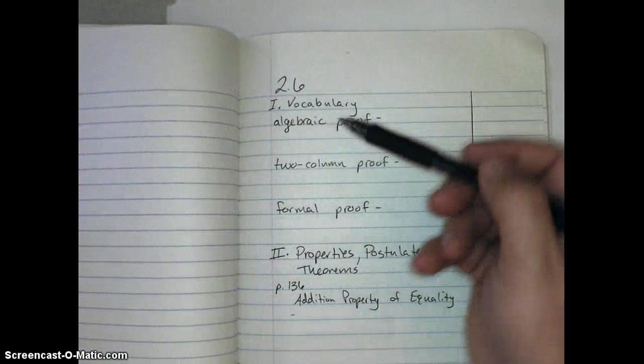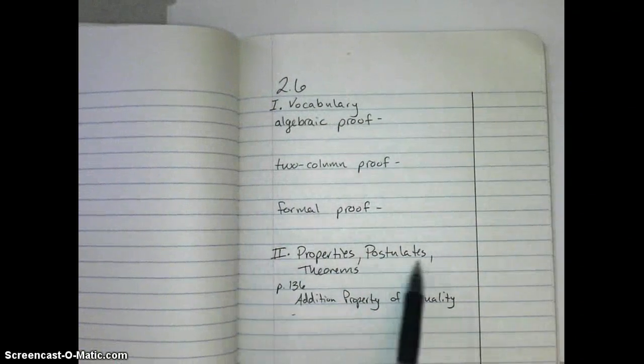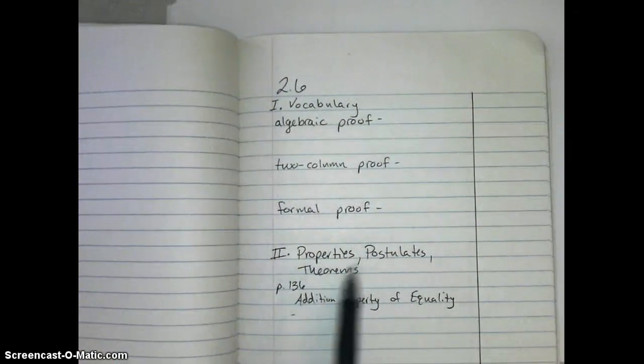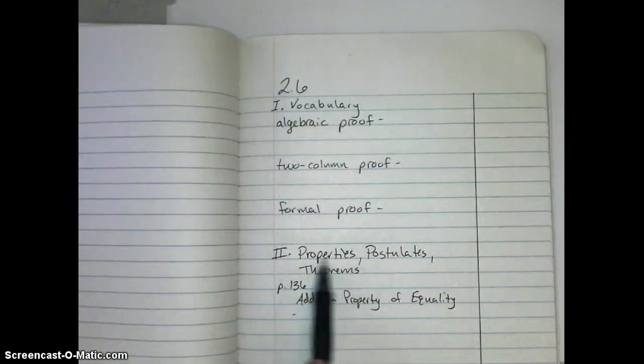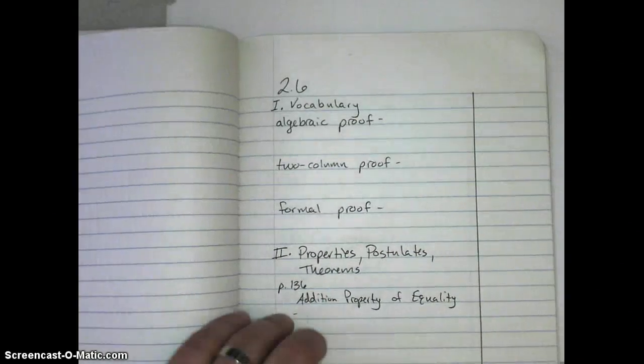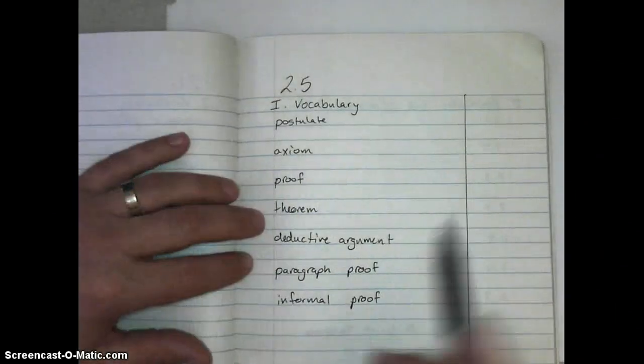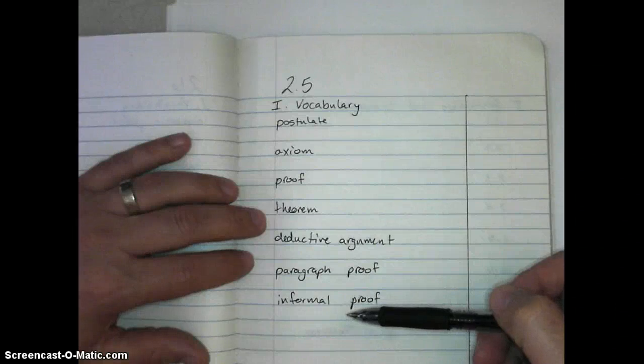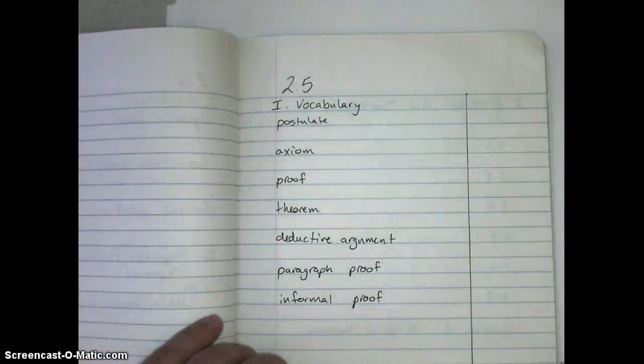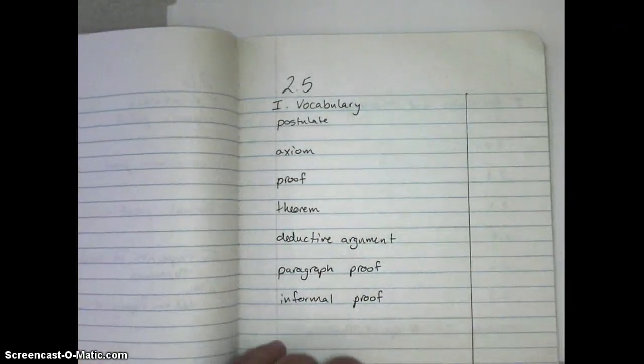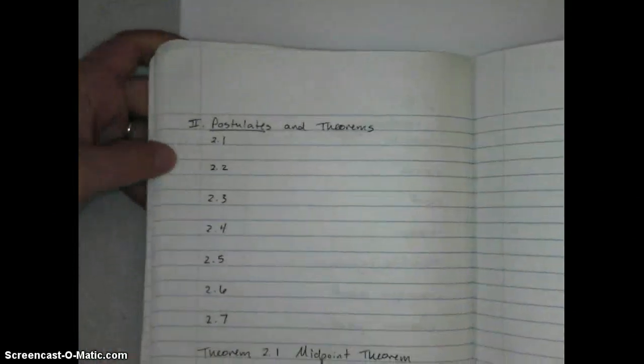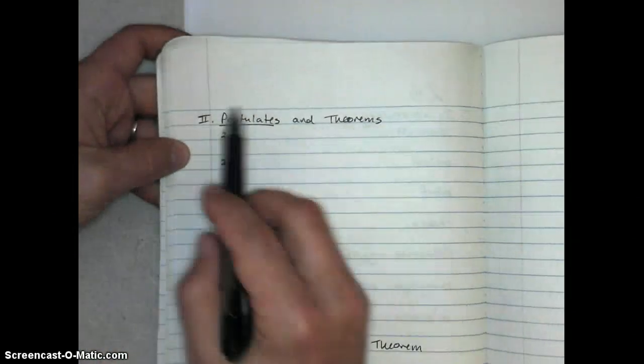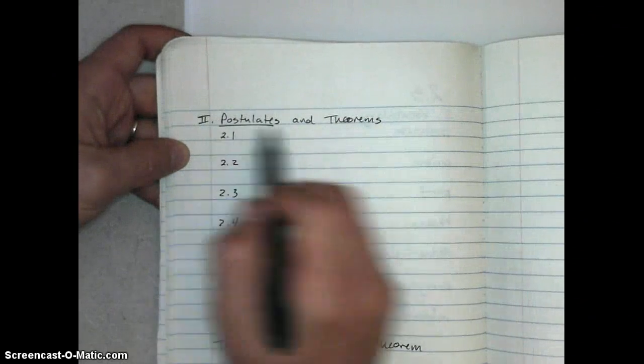In Lesson 2-6, we introduced the second part of your vocab book, where you will list properties, postulates, and theorems, and all those in Lesson 2-6 were the properties. So when we get to Lesson 2-5 now, you have these vocab words, hopefully you have definitions for those, and wherever that leaves off on the second page, or just at the top of the second page if you can start there, we want to talk about postulates and theorems. There are no properties in this lesson, so we'll just say postulates and theorems.